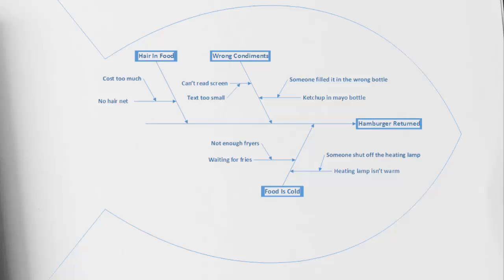We can see that we have three causes. Starting in the top left, there's hair in food, wrong condiments, and food is too cold. For the hair and food category, using our Ask Why technique, the reason there may be hair in food is because there are no hair nets available — and perhaps no hair nets are available because they cost too much.